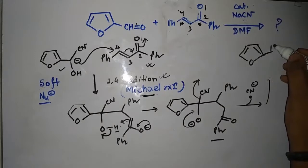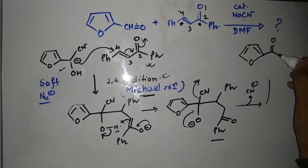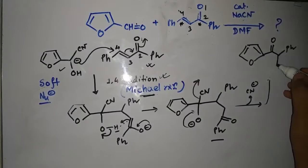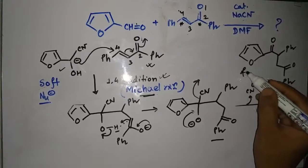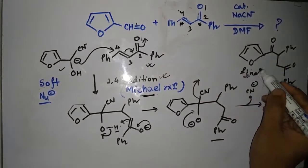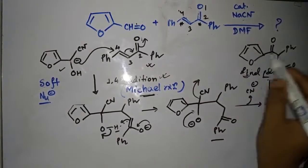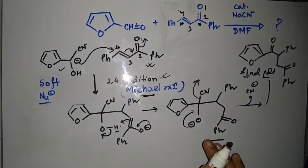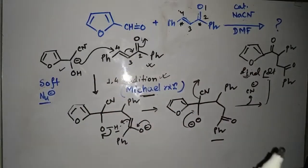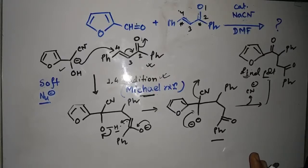The double bond C=O forms and the final product structure has a C=O, with the furan and the Ph groups in place. This is our final product. This is a very interesting question because so many possibilities exist and we have to identify the hard and soft centers and determine which will prefer which. We have to be careful when doing the mechanism, as this is a very tactical question.